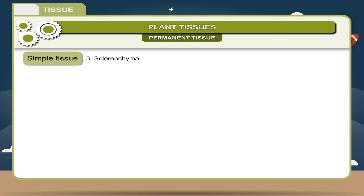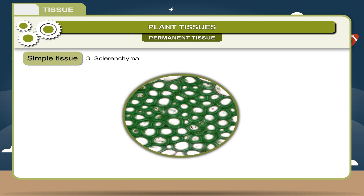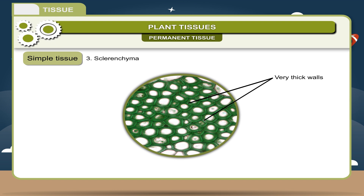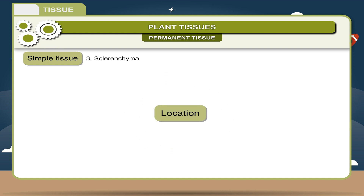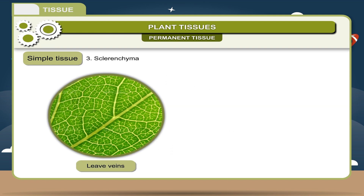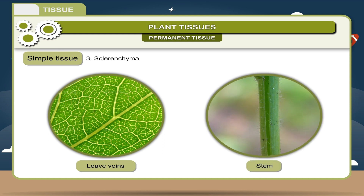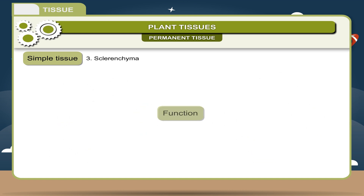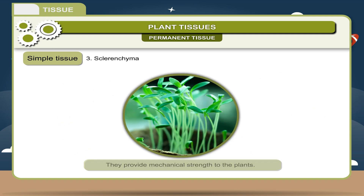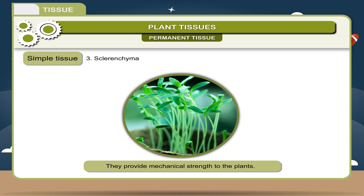3. Sclerenchyma. They are composed of very thick-walled dead cells. There are no intercellular spaces between the cells. Location: it is found in the veins of the leaves and stems. Function: they provide mechanical strength to the plants.